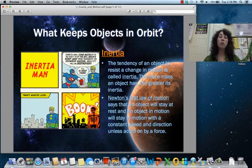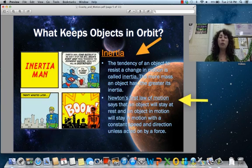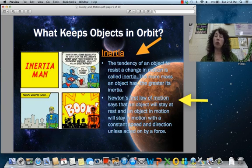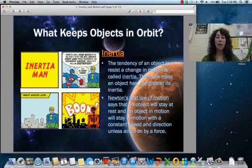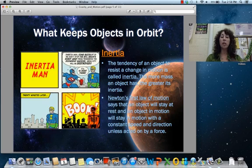Okay so why don't objects fly off into space? There are a couple of forces keeping objects in orbit. One of those is inertia, which is just Newton's first law of motion. The tendency of an object to resist change in motion. So the more mass the more inertia. And again Newton's first law just tells us objects at rest are going to stay at rest. Objects in motion are going to continue on in that motion unless something else acts on them.